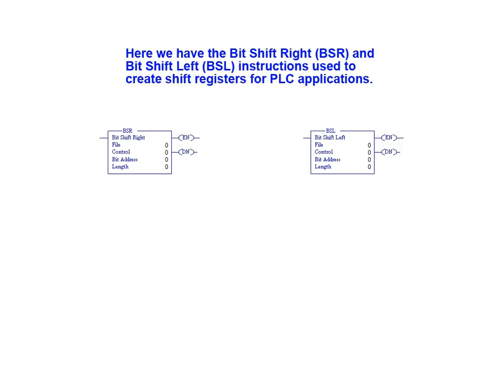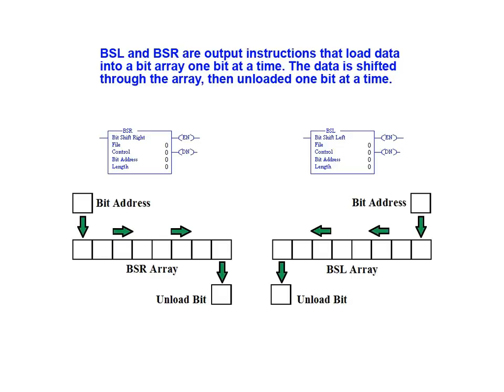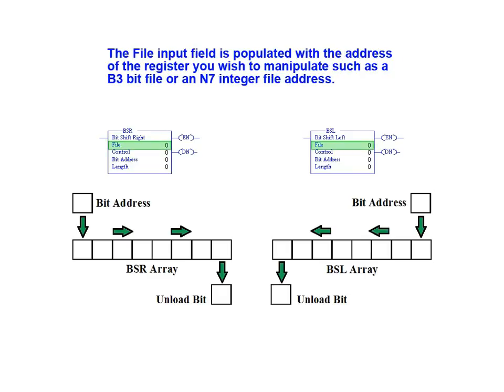Here we have the bit shift right and bit shift left shift register instructions. BSL and BSR are output instructions that load data into a bit array one bit at a time. The data is shifted through the array and then unloaded one bit at a time. The file input field is populated with the address of the register you wish to manipulate, such as a B3 bit file or an N7 integer file address.